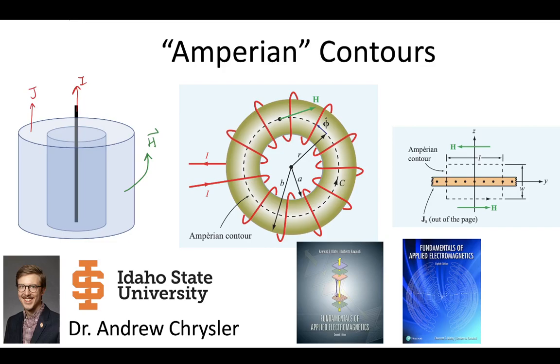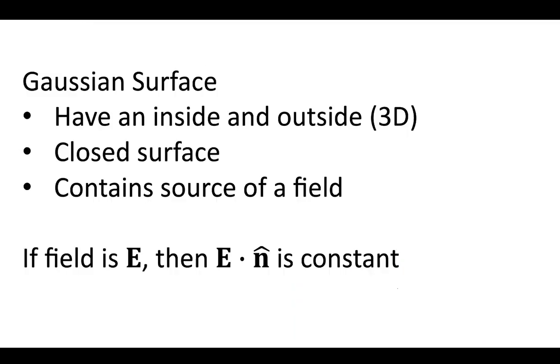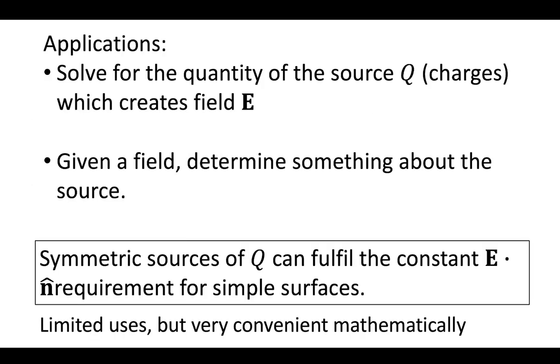Previously during electrostatics we used Gaussian surfaces. Gaussian surfaces had an inside and an outside, it was a closed surface, and it contained the source of a field. If the field is E, the electric field, then E dot n is constant. So there's a constant electric field at all points on that Gaussian surface.